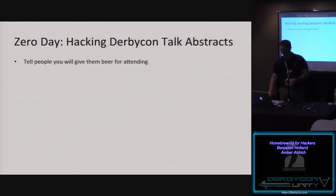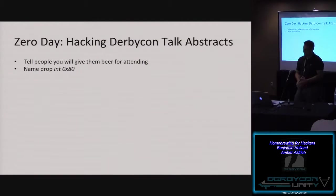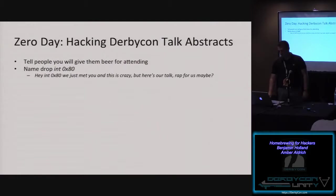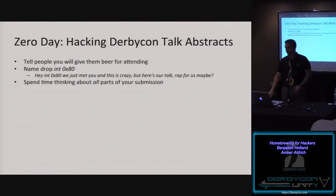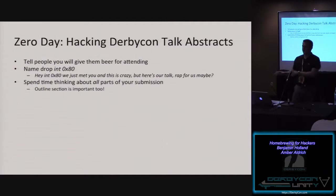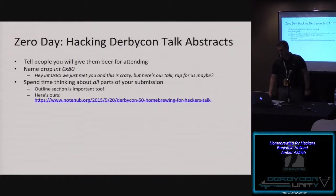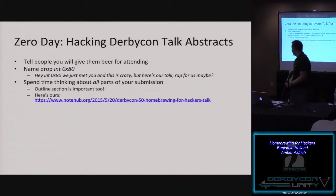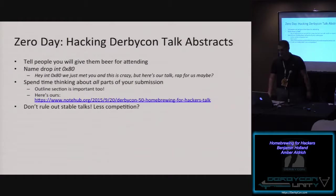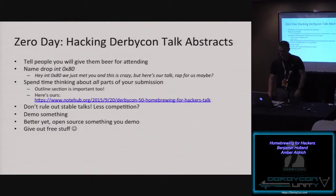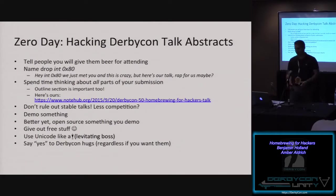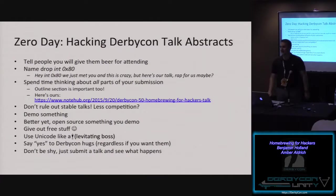So this is how to get a DerbyCon talk accepted. First, tell people you'll give them free beer. Name-drop 'in80' regardless of whether you know him or not. Seriously though, spend some time thinking about what your submission says — even the parts attendees won't see. Don't rule out the stable talks; there's a little less competition. Demo something, open source what you demo, DerbyCon loves open source. Use Unicode like a floating boss, say yes to DerbyCon hugs, and don't be shy — just submit.